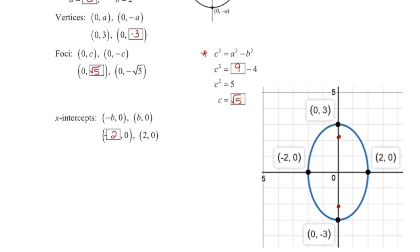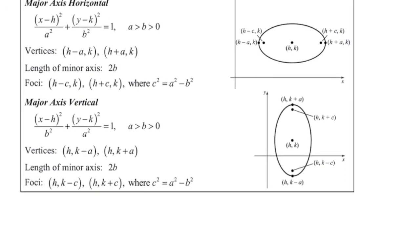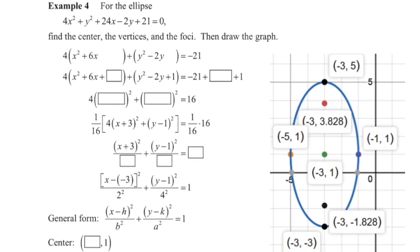Not all the time will our ellipse be at the center — we can utilize the same formulas as before. However, we're going to have h, k identify where the center of our ellipse is, and then our vertices and foci have to be solved slightly differently. For the ellipse 4x squared plus y squared plus 24x minus 2y plus 21 equals 0, let's find the center, the vertices, and the foci and then draw the graph. First, I'm going to rearrange these so that I have all my x values together, as I'll most likely need to complete the square. So 4x squared plus 24x plus y squared minus 2y equals negative 21.